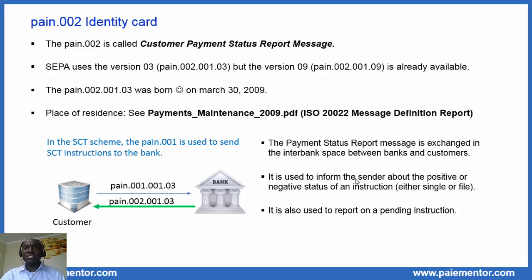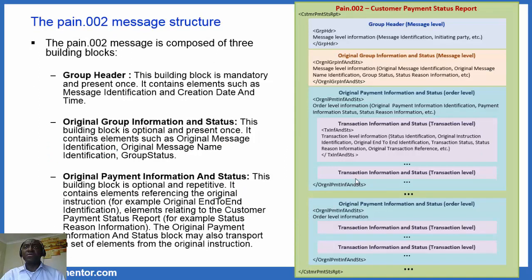How does a PAIN.002 message look like? The customer payment status report message is composed of three building blocks: a group header, an original group information and status, and an original payment information and status. The transaction information status block is completely indented within the original payment information and status block. The group header is mandatory and present once. It contains, among other things, the message identification, which allows customer and bank to unambiguously identify the message. The message ID is generated by the debtor bank.